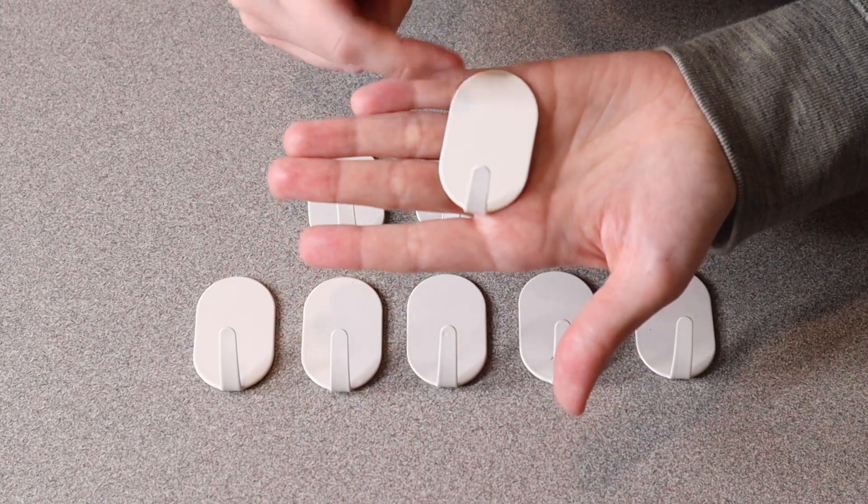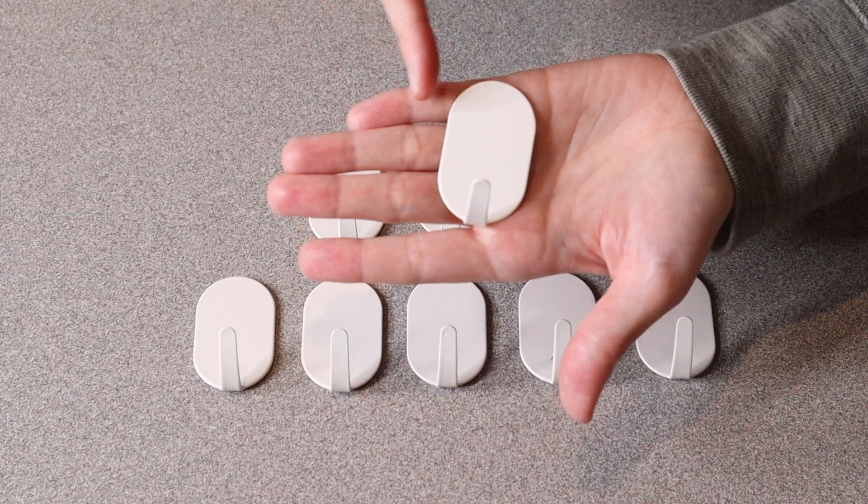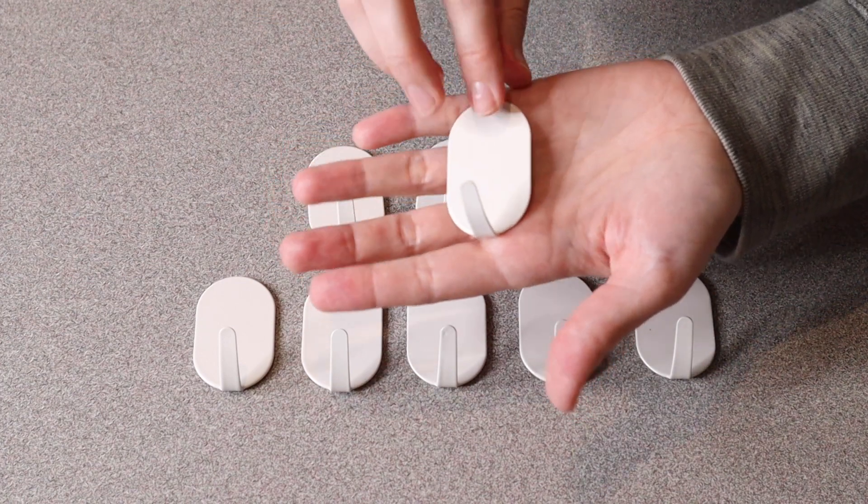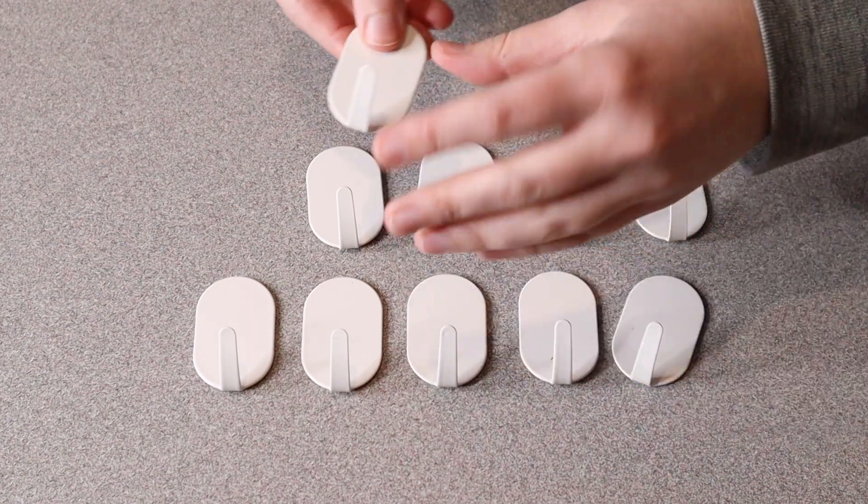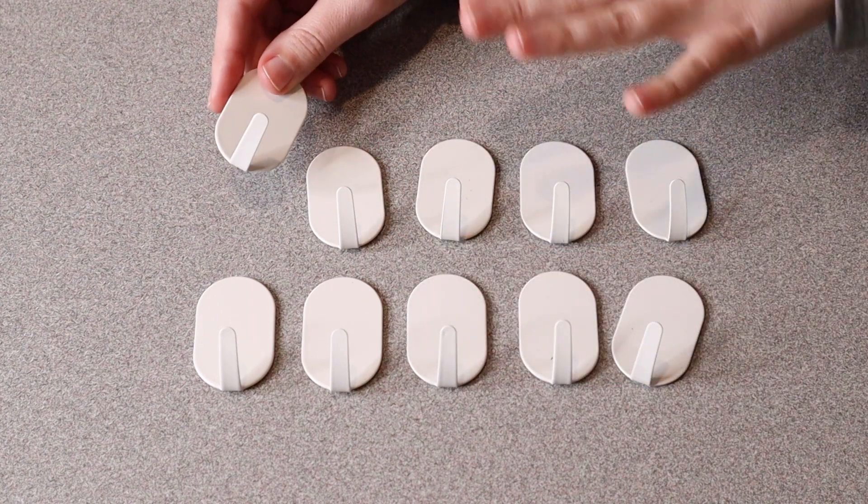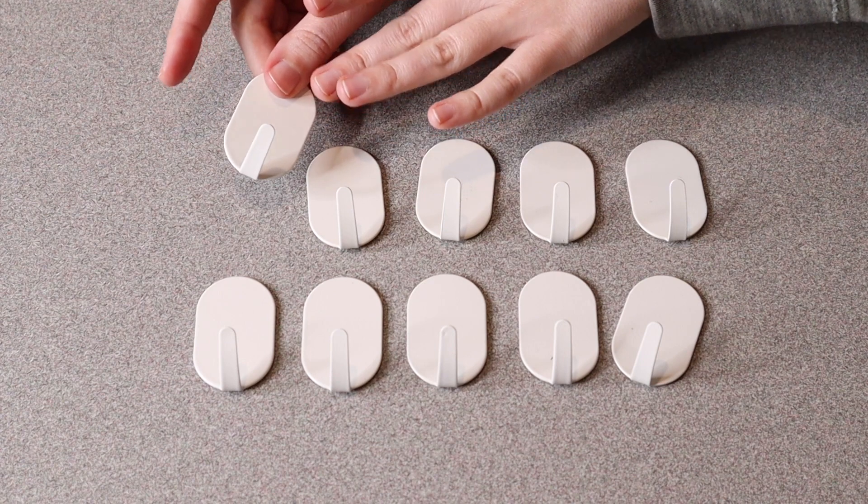For size reference these are 1.9 inches tall and 1.2 inches wide and they would stick out from the wall a total of 1.2 inches. These are going to be perfect for hanging things like keys, hats, purses, towels, and shirts.